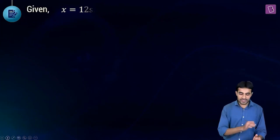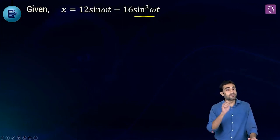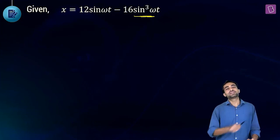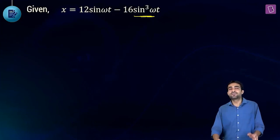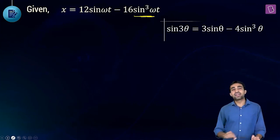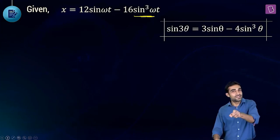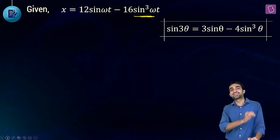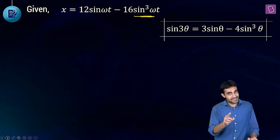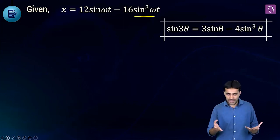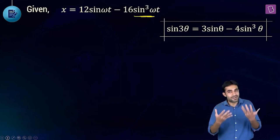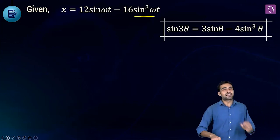Our equation contains a sin³ term. Recall the trigonometric identity: sin3θ = 3sinθ − 4sin³θ. If you don't remember this, write it down and memorize it. Now let's apply this identity to our equation.